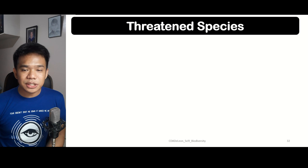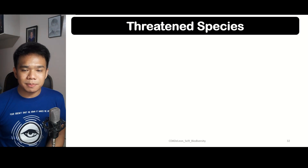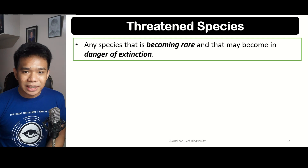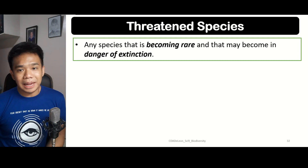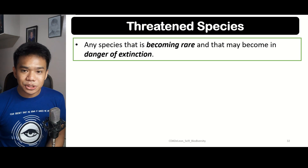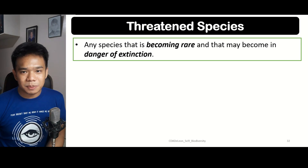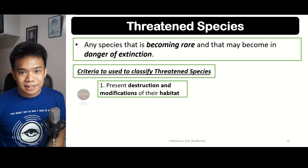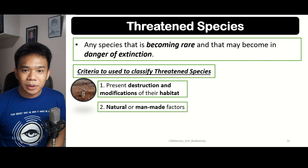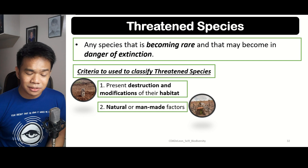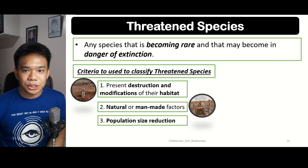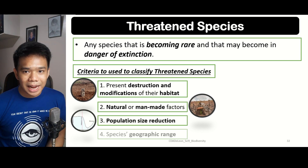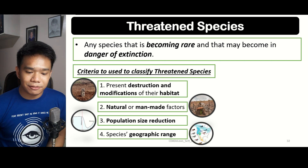Next, we're going to discuss the idea of threatened species. When we talk about threatened species, this refers to any species of either plants or animals that is in danger of extinction. We classify threatened species according to certain criteria: habitat destruction, natural and man-made factors that may affect extinction, population size reduction, and the distribution of species based on geographic range.